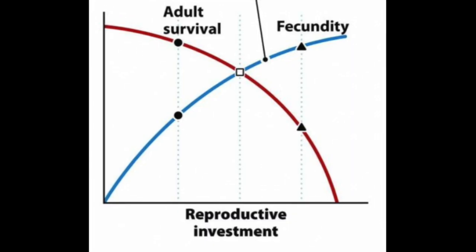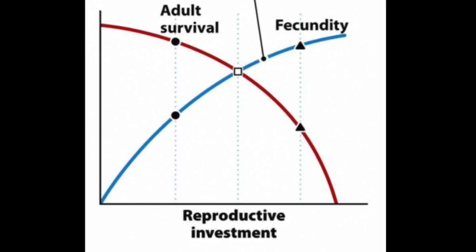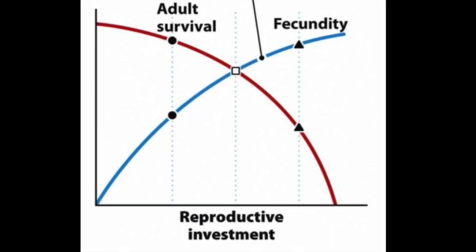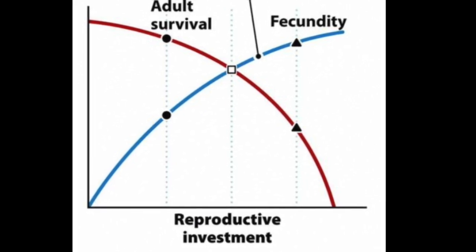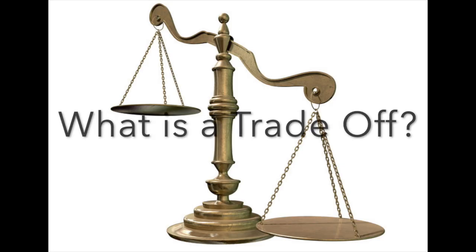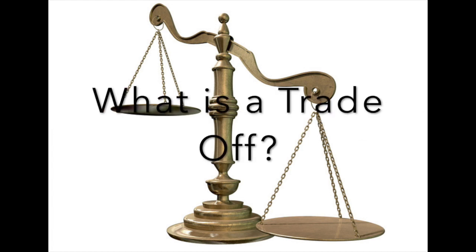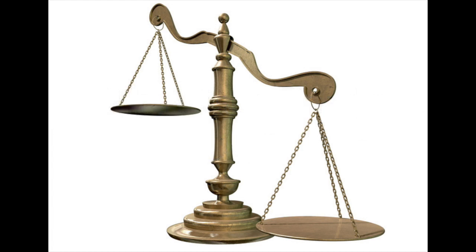However, traits such as fecundity, offspring size, early production, and mortality rate are subject to trade-offs and pressures. Trade-offs involve the compromisation of two desirable traits where the more advantageous trait increases whilst the other decreases in performance and efficiency. This is due to the inability to invest all energy into the two respective trade-offs.